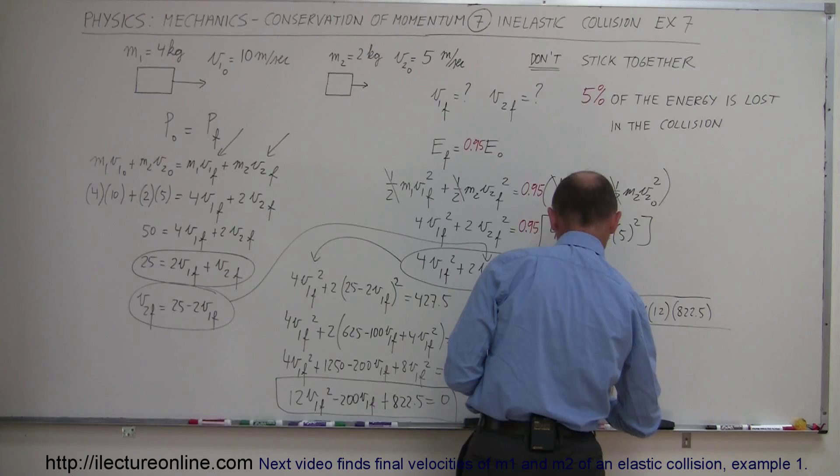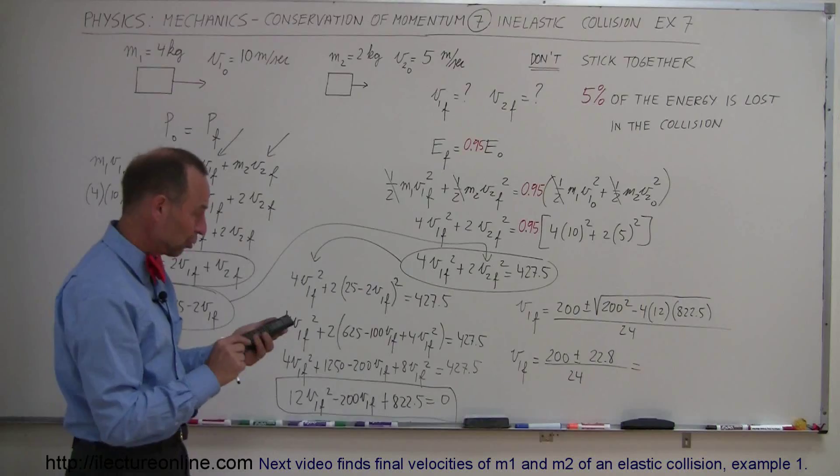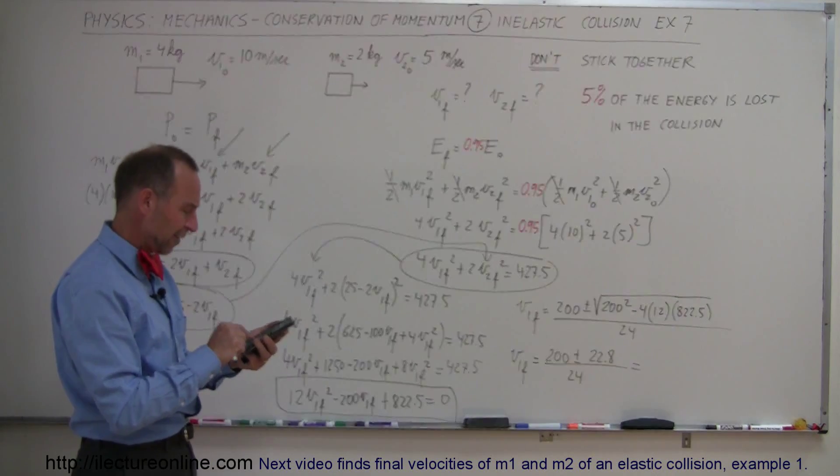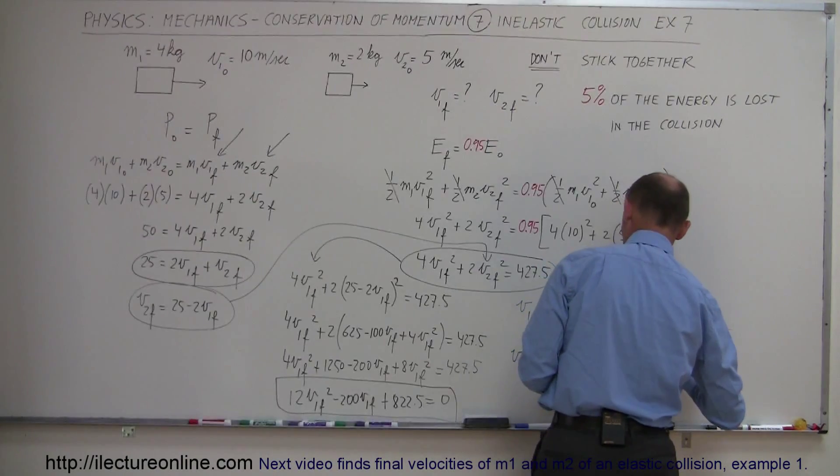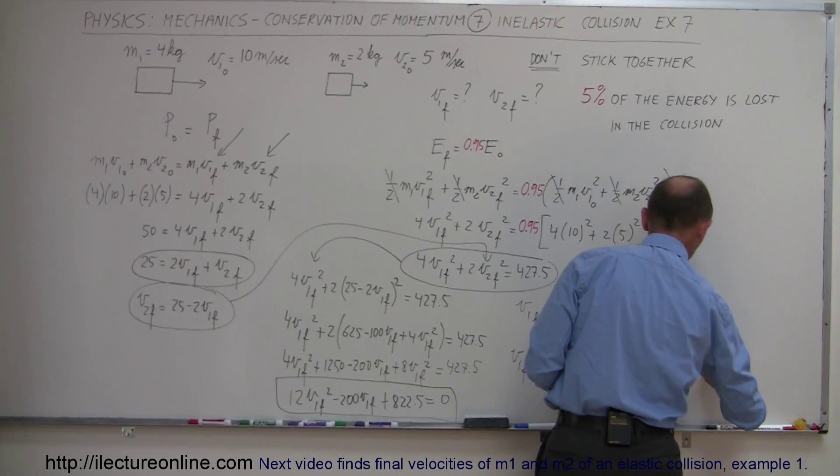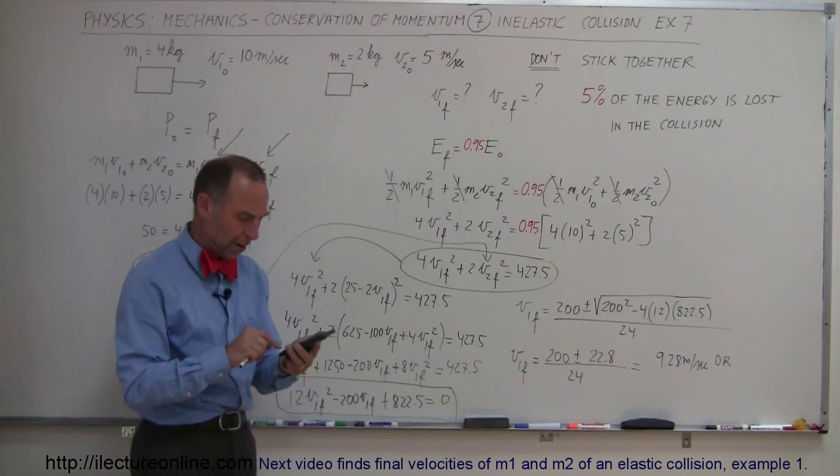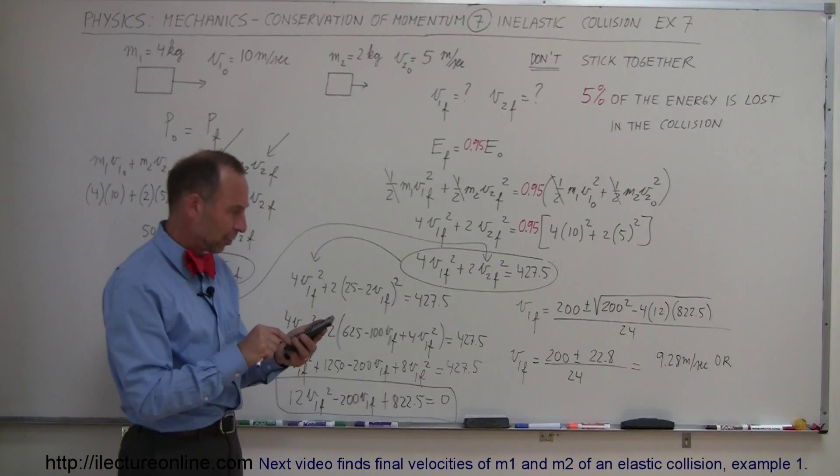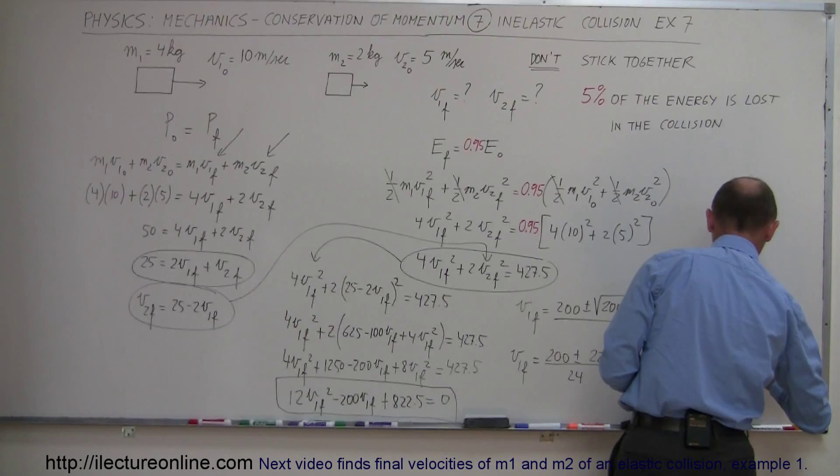All right so that gives us these two possible answers. If I take plus 22.8 what do I get? So that would be 200 plus 22.8 divided by 24 equals, I get 9.28. So V1 final is 9.28 meters per second. Or if I take the negative answer so we have 200 minus 22.8 and divide that by 24, I get 7.38 meters per second.